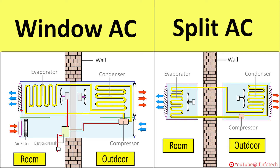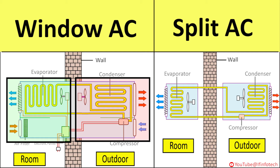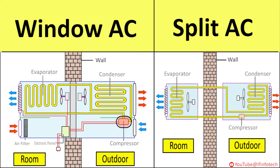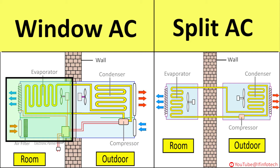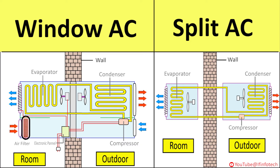In this session we are going to learn the working of window AC and split AC. Window AC consists of a casing divided into two parts: the outdoor part and the indoor part. The outdoor part, fitted outside the room, consists of compressor, condenser, motor, and ribbon fan. The indoor part, fitted into the room, consists of evaporator, motor, ribbon fan, expansion device (capillary), control panel, air filter, and power connection.